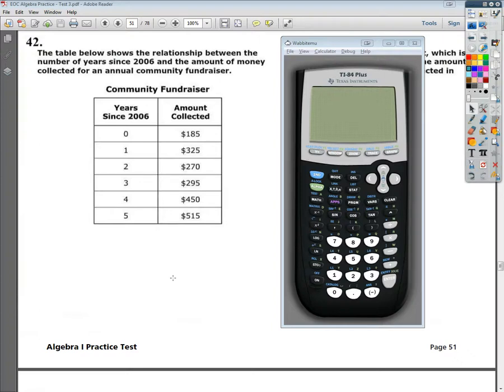Welcome, this is the Algebra 1 end of course practice test number 3, question number 42. The question says, the table below shows the relationship between the number of years since 2006 and the amount of money collected for an annual community fundraiser.